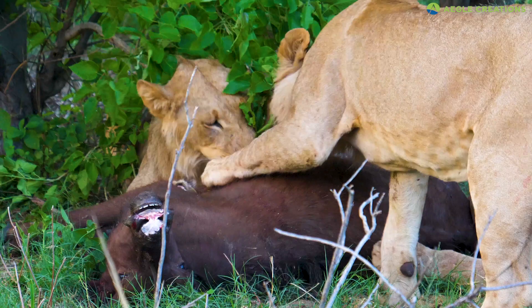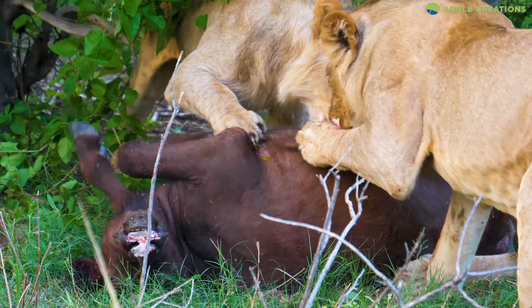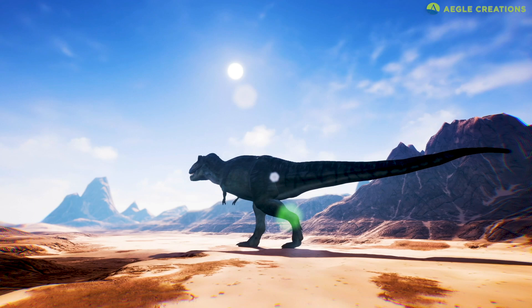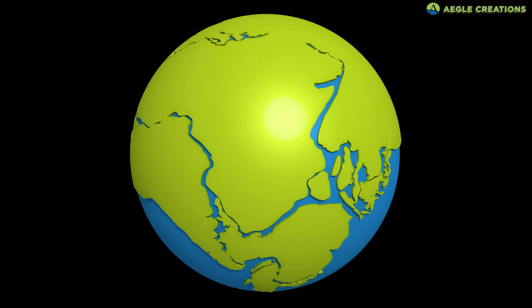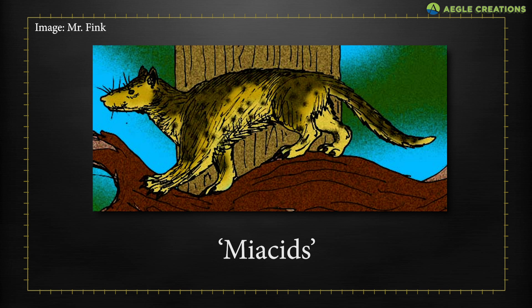Millions of years ago, the ancestors of modern cats became exclusive meat eaters. Rewinding back 65 million years ago, following the extinction of dinosaurs, when oceans and continents were similar to the maps of today, primitive creatures called miacids roamed the planet. Experts believe that all carnivores evolved from this small-bodied creature.